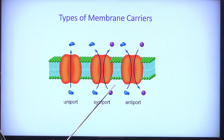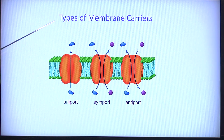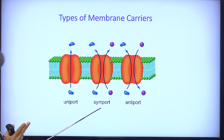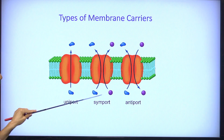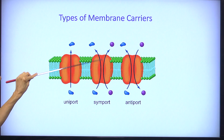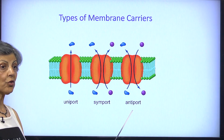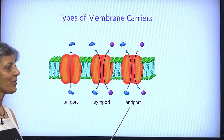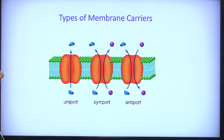There are three types of membrane carriers or transporters. A uniport is a protein that allows one solute only to move in one direction — either from inside out or outside in. A symport transports two substances at the same time in the same direction. An antiport moves two substances in two different directions simultaneously — one solute leaving while the other is coming in.